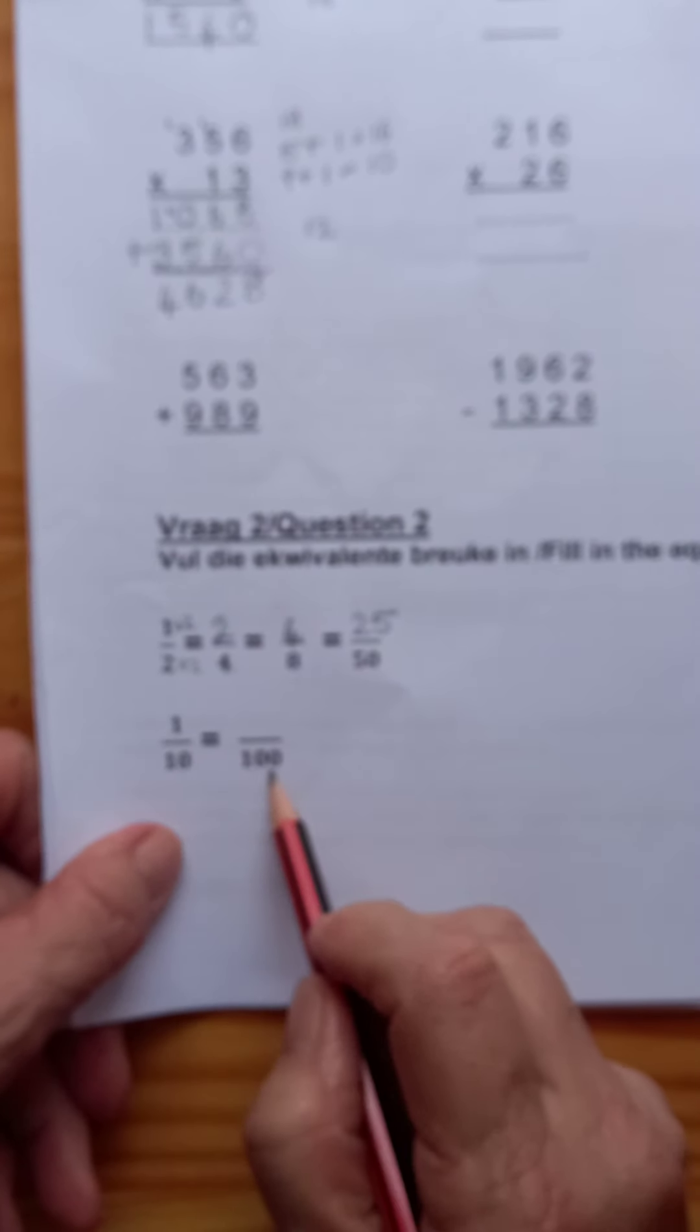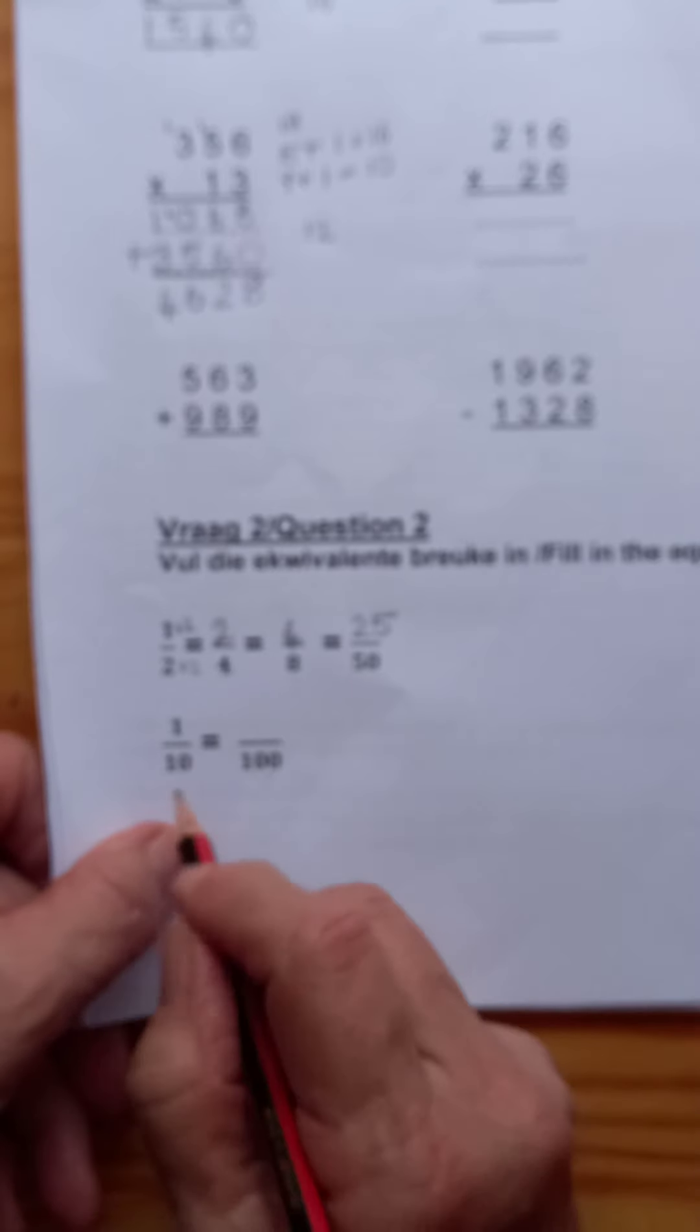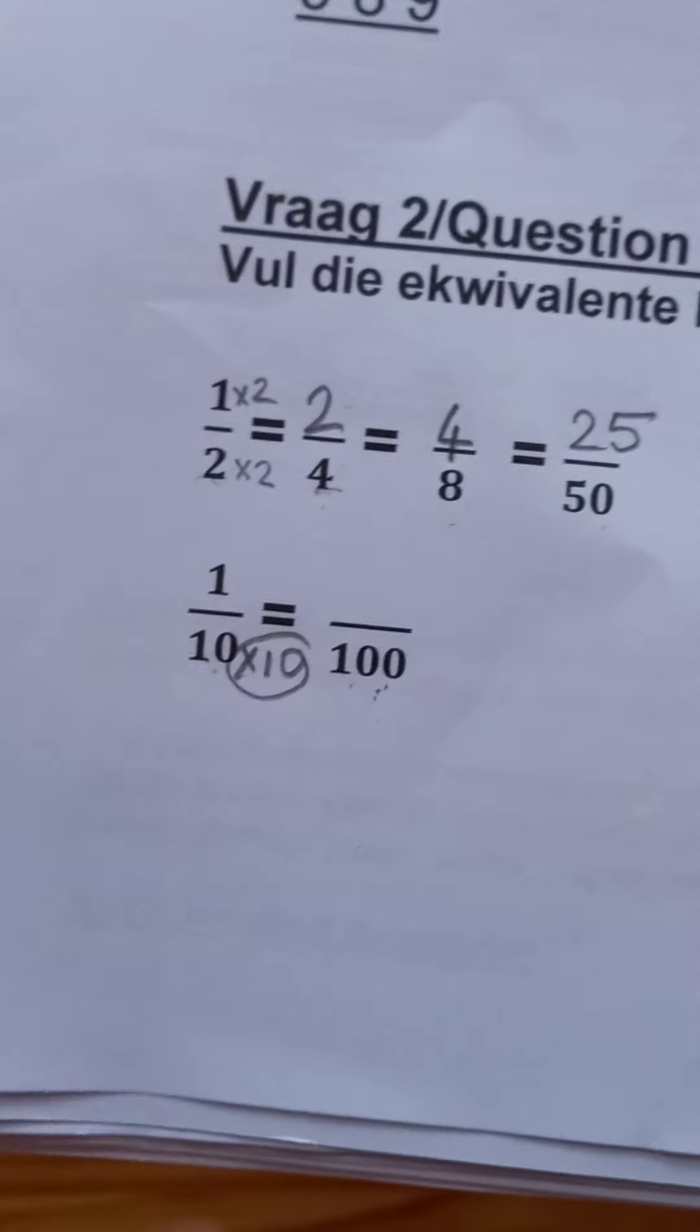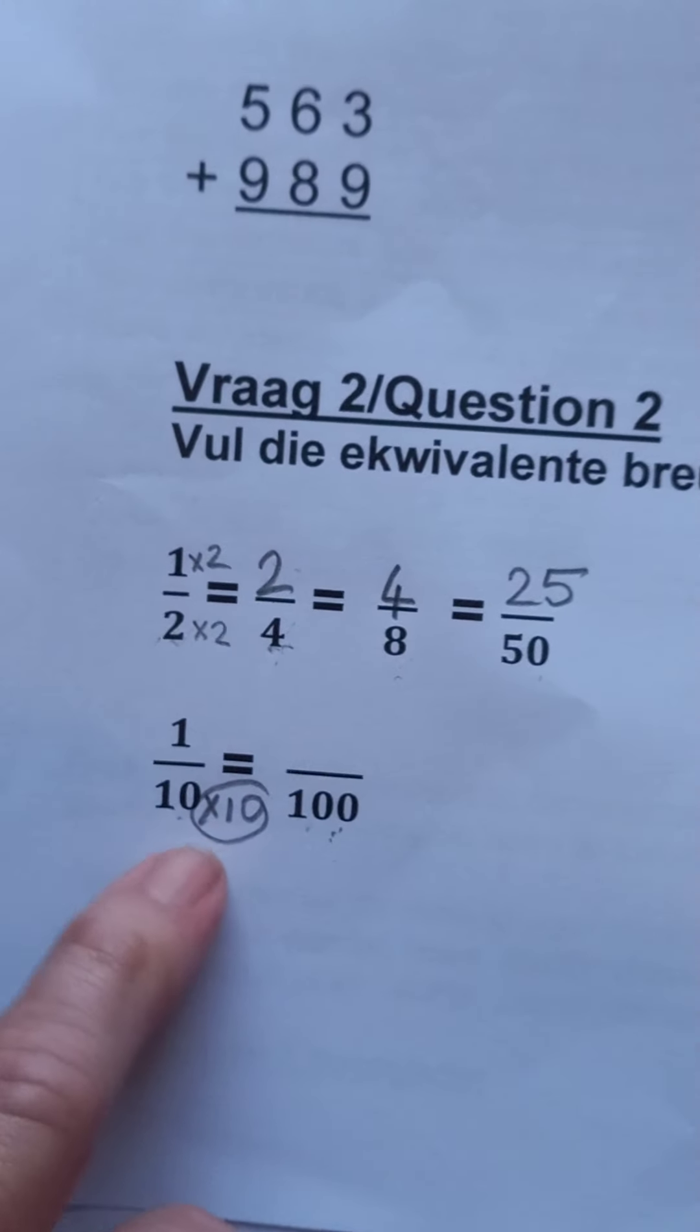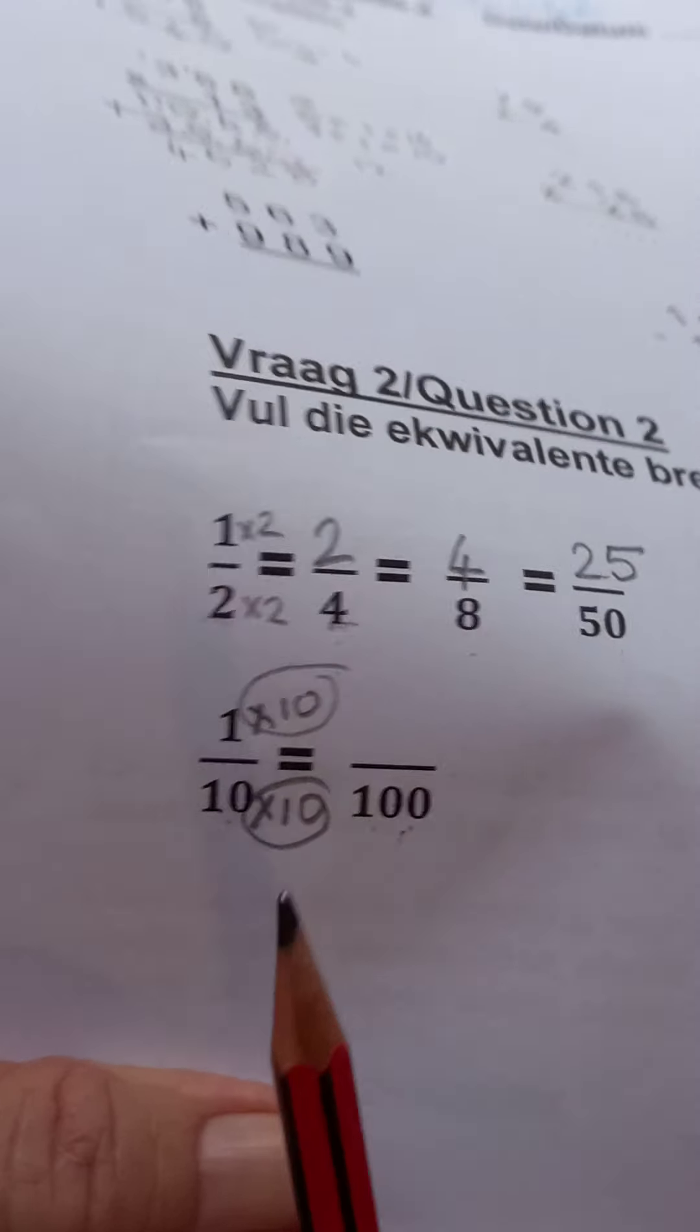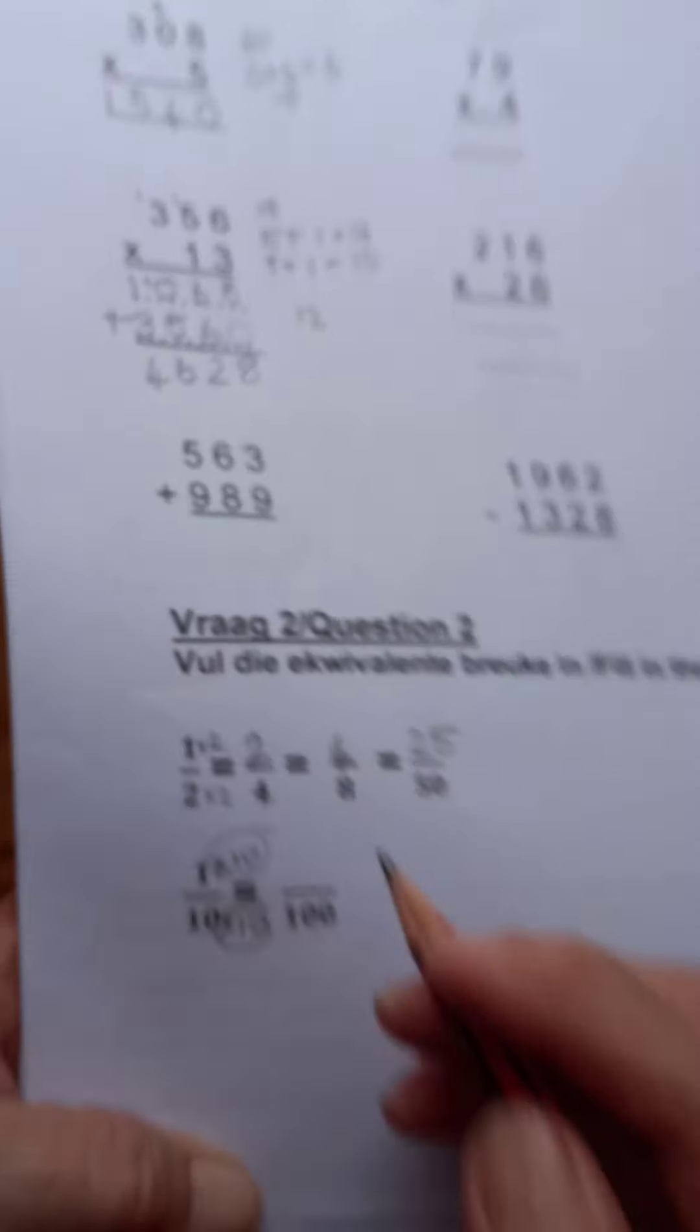The same here, how many times does 10 go into a hundred? Yes, 10 times. So what you did at the bottom you must also do at the top, so it is also times 10. 10 times 10 is 100 and 1 times 10 is 10. So one tenth is the same as 10 hundredths.